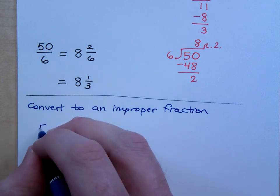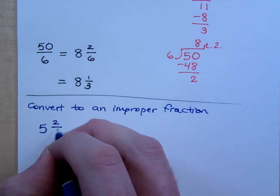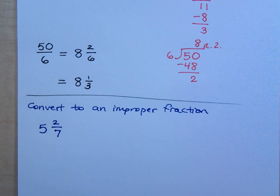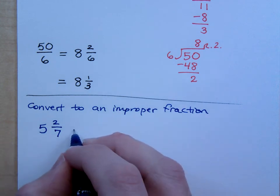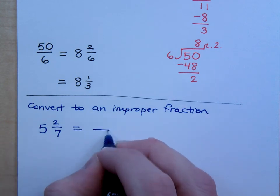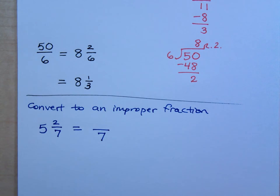So if I have 5 and 2 sevenths, how do I convert that to an improper fraction? What's the denominator going to be for that improper fraction? 7. 7.